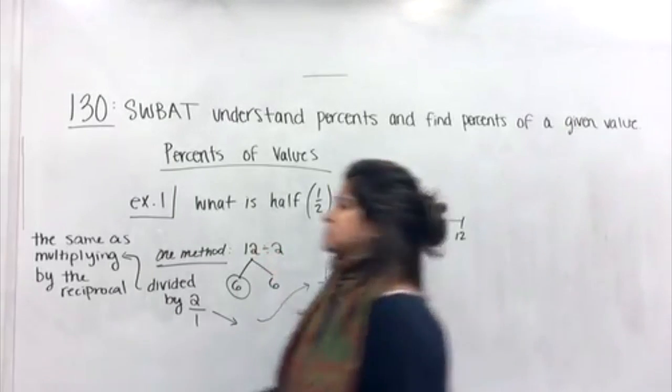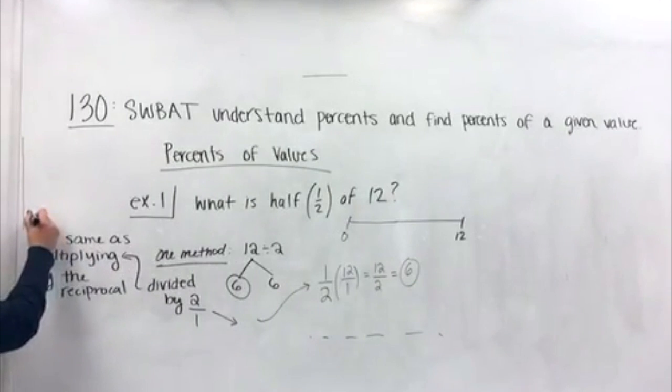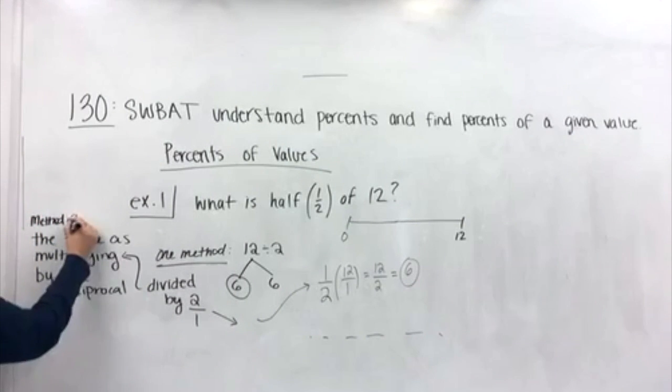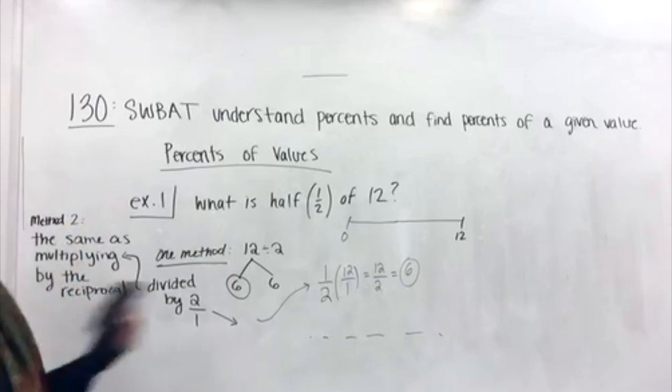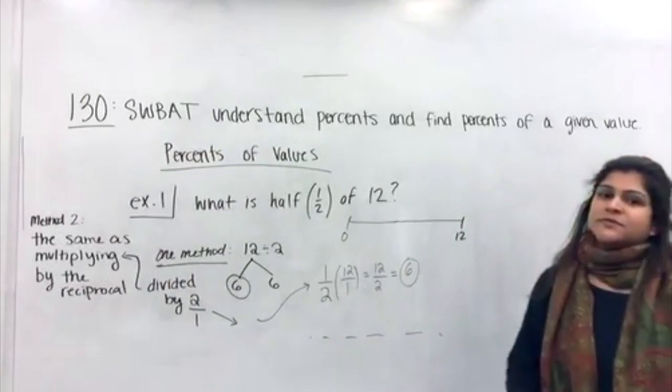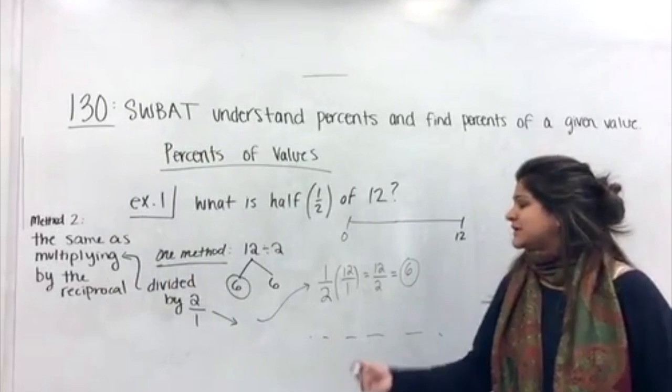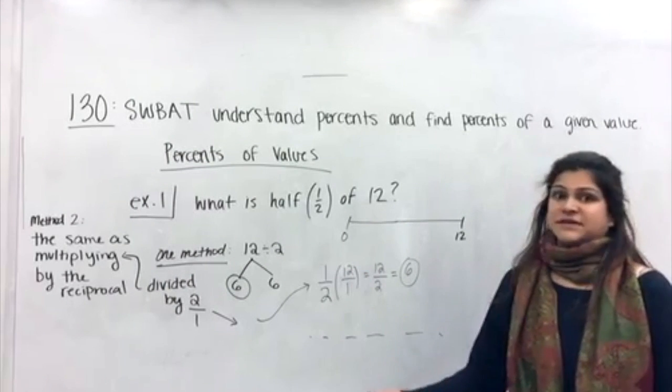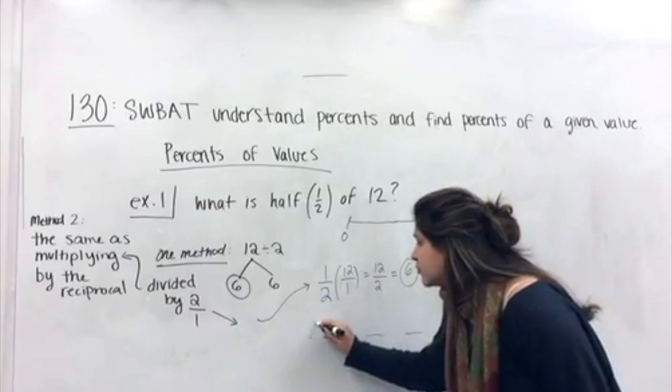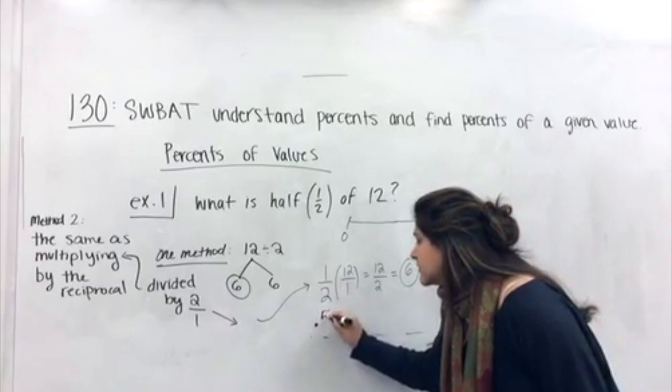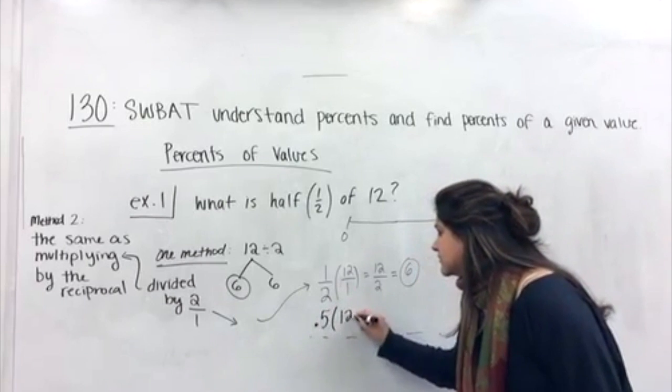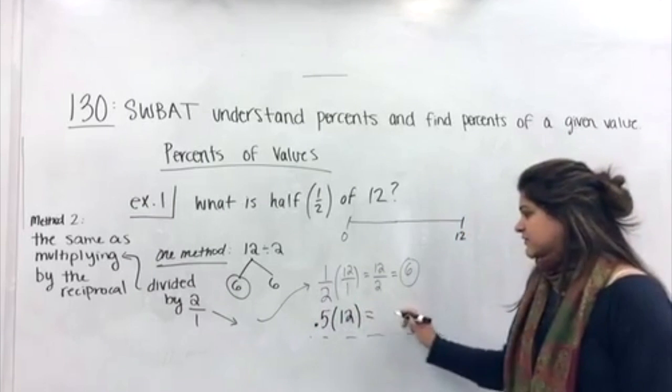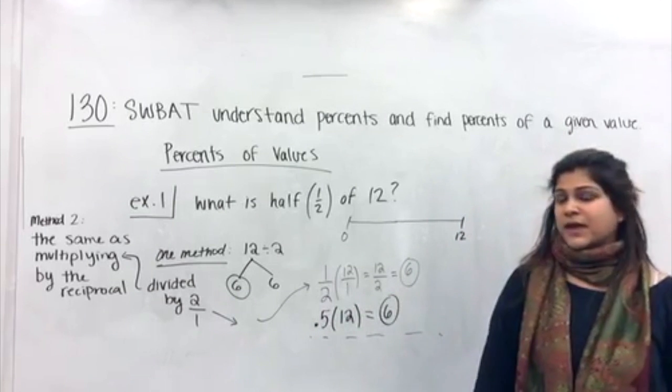So, notice we can either divide by two, or we can just multiply. What is one half of twelve? One half times twelve gave us six. Another way we could have looked at it, there's one method, here's another one. Multiplication by the fraction. You just multiply one half by twelve. So, we can also represent one half in different ways. We could see this as a decimal. This is one half, or point five, times twelve. And point five times twelve should also give us six.